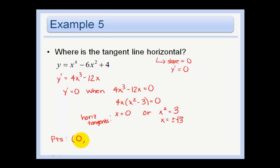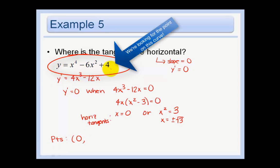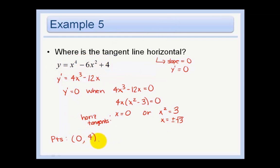I'm going to go ahead and plug that back into our original equation, not our derivative equation because we want the point on the line. So that's going to be 0 minus 0 plus 4. Our next point would be at root 3. If we stuck that in, we should get negative 5. And similarly, if we plug in negative root 3, we will also get negative 5.